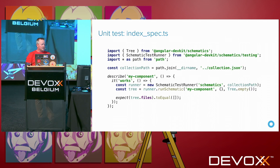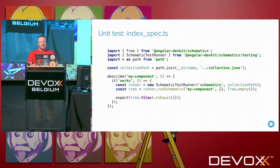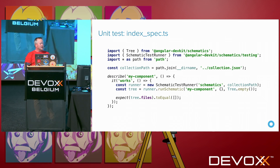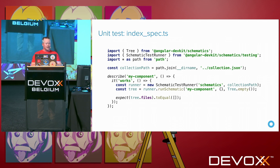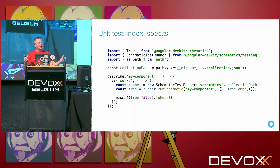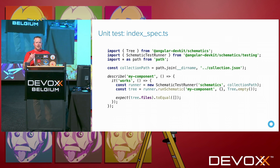To test it, you can write a test and prove it does nothing — these are both the files generated by default. You import the tree, set a collection path, and there's a schematic test runner that allows you to run schematics and then run your specific schematic. You can run it against an empty tree and make sure no new files are created. It gives a nice way to unit test the schematics you're creating.